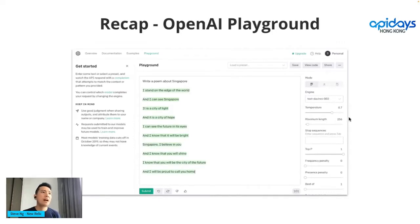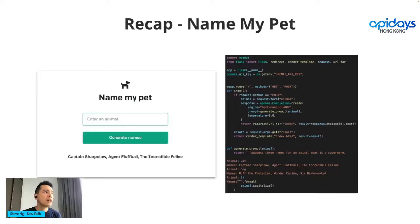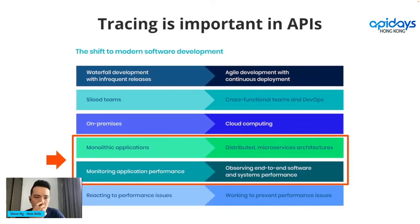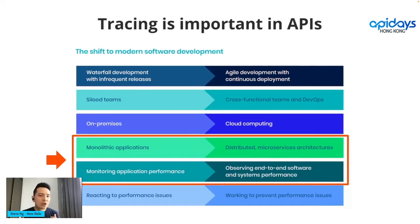Quick recap: OpenAI Playground is quite cool, and everything goes through the backend API. The secondary part is: once you build services like this, how do you know if it's your app or the external service that's slow? That's where tracing makes a lot of sense. In an API-driven architecture, tracing can be a really important element, especially as the industry moves away from monolithic applications toward microservices. With OpenAI or any API SaaS-based or cloud-based service, you eventually need to figure out: is it them or is it us? Tracing can pinpoint exactly which part of the whole API call is actually slow.